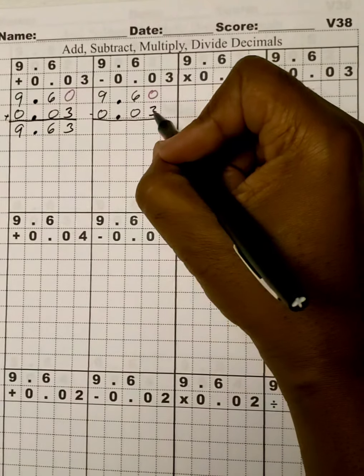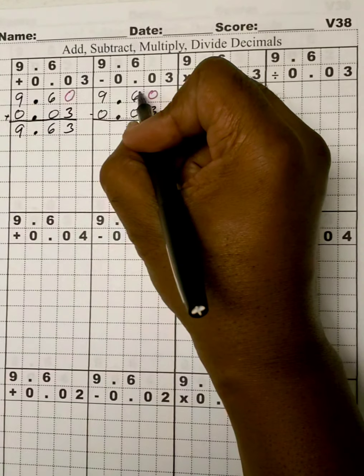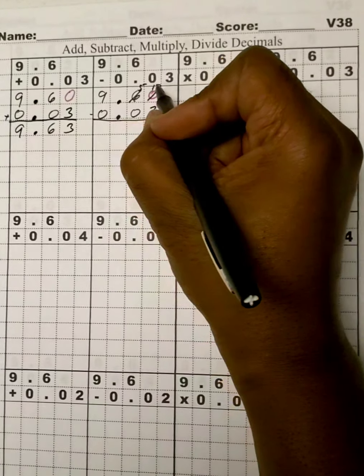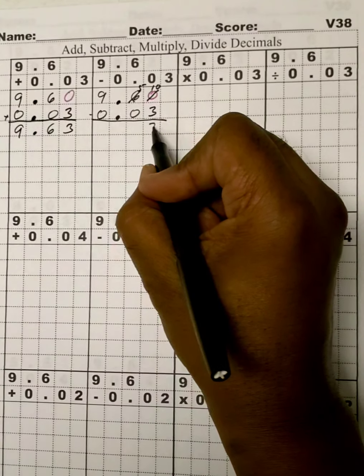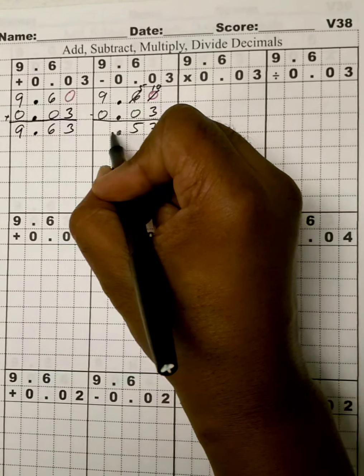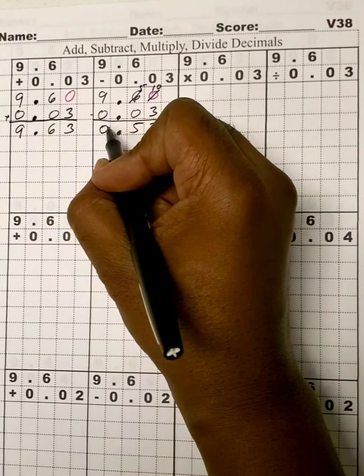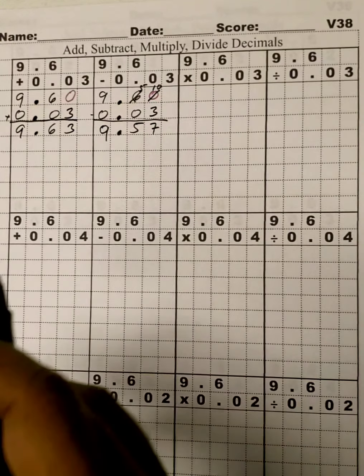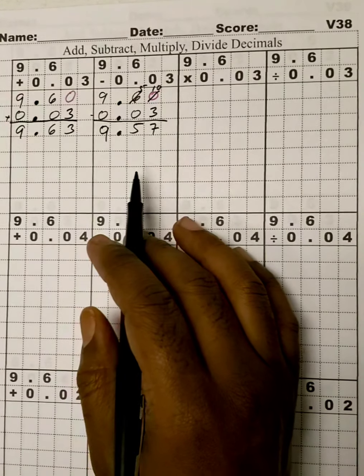let's subtract. We cannot take 3 from 0, so we'll borrow from the 6, make it 5. And this becomes now a 10. 3 from 10 is 7. 0 from 5 is 5, your decimal. And then 9 here. 0 from 9 is 9. And now subtraction is done.